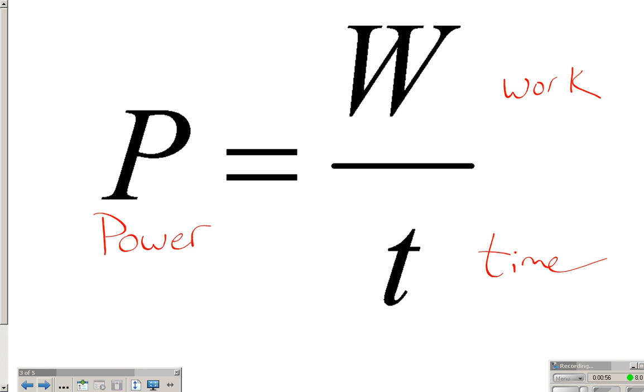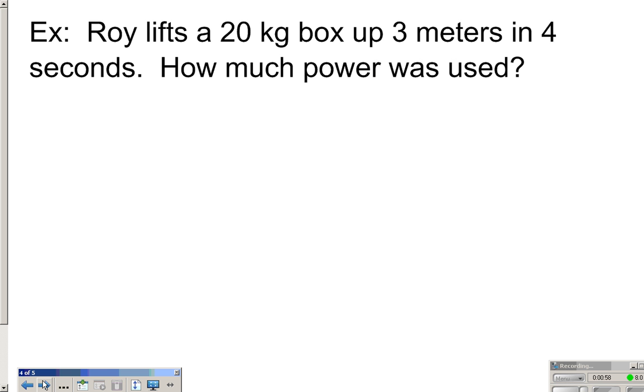Probably the easiest way to do this would be to do an example. So here we go. Example number one. Roy is going to lift a 20 kilogram box up three meters in four seconds, and we need to figure out how much power was used. So the first thing we're going to do is get a good appreciation of what's happening. So as usual, I like to make a drawing. So here we go, a little box. 20 kilograms is the mass of the box, and we are going to lift it up here to a height of three meters.